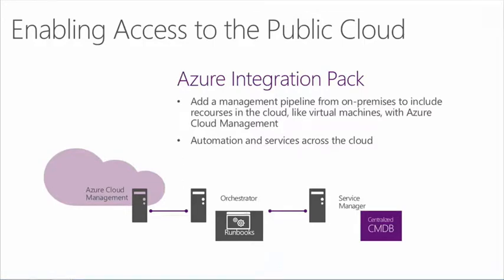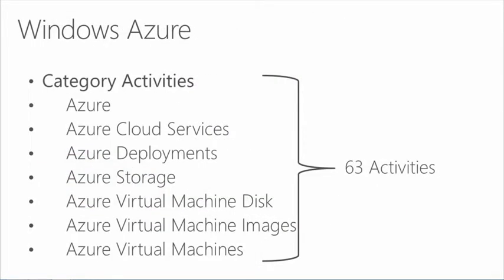As we talked about, we have the Azure integration pack, and this one helps enable us to perform more tasks in the public cloud space — adding a layer of management, managing VMs, and performing tasks that may exist in that cloud through connectivity with Orchestrator and Service Manager. Some of the things I can do include Azure cloud services, Azure deployments, managing Azure storage, VMs, images, and a number of other tasks — totaling approximately 60 or so activities that you now have the ability to manage with this pack.